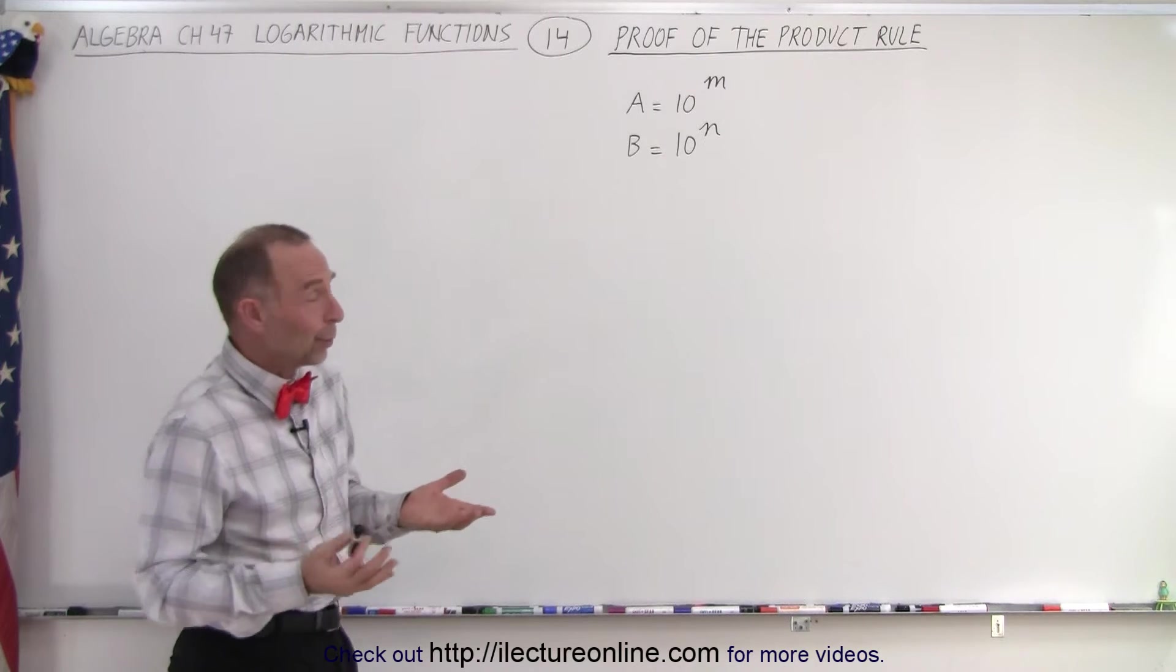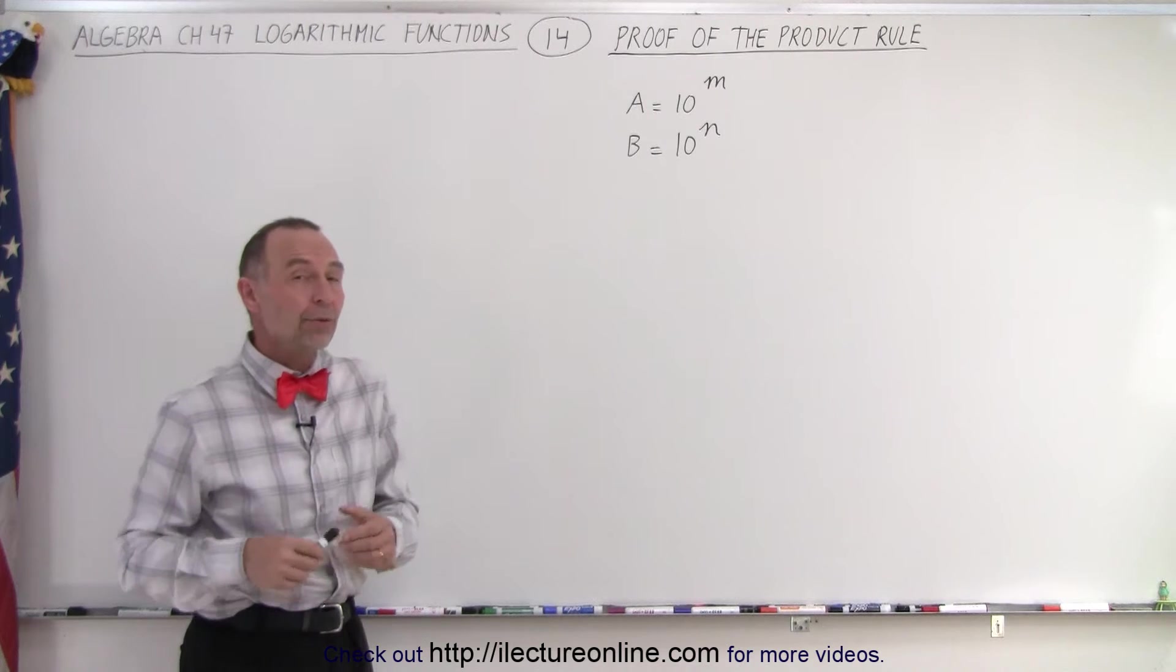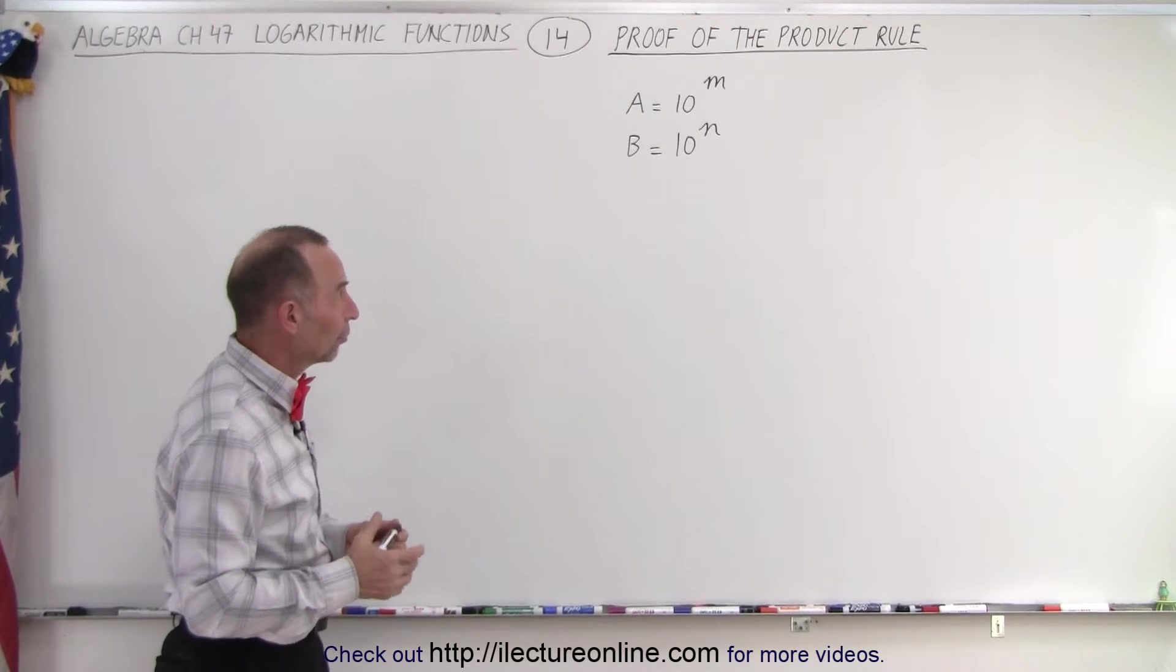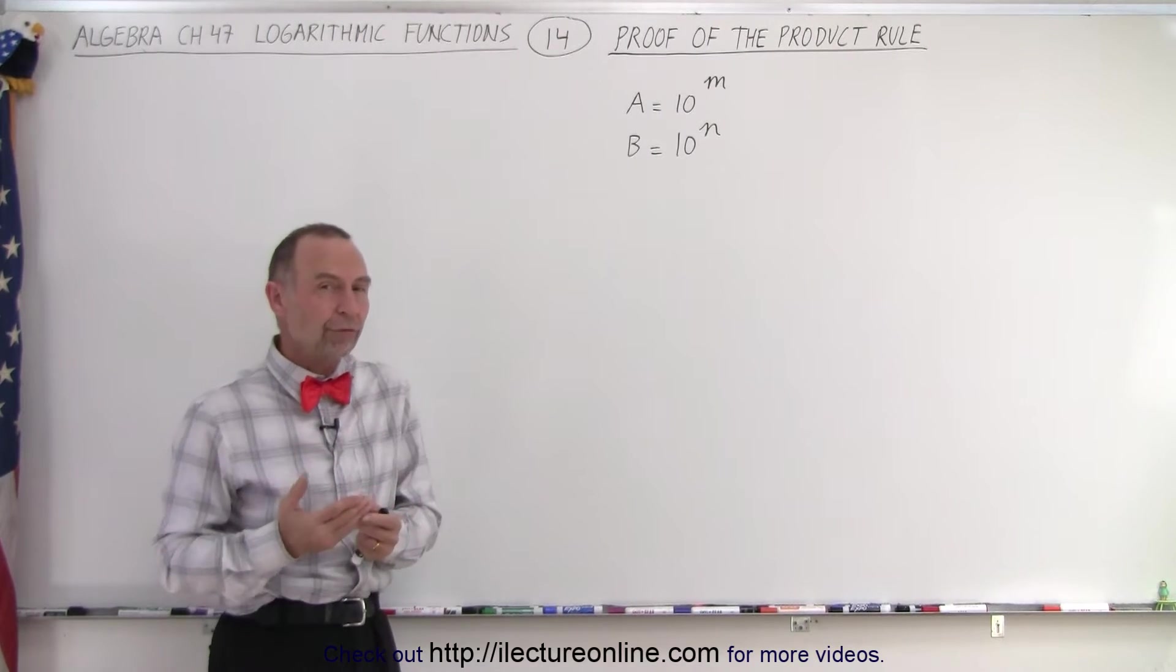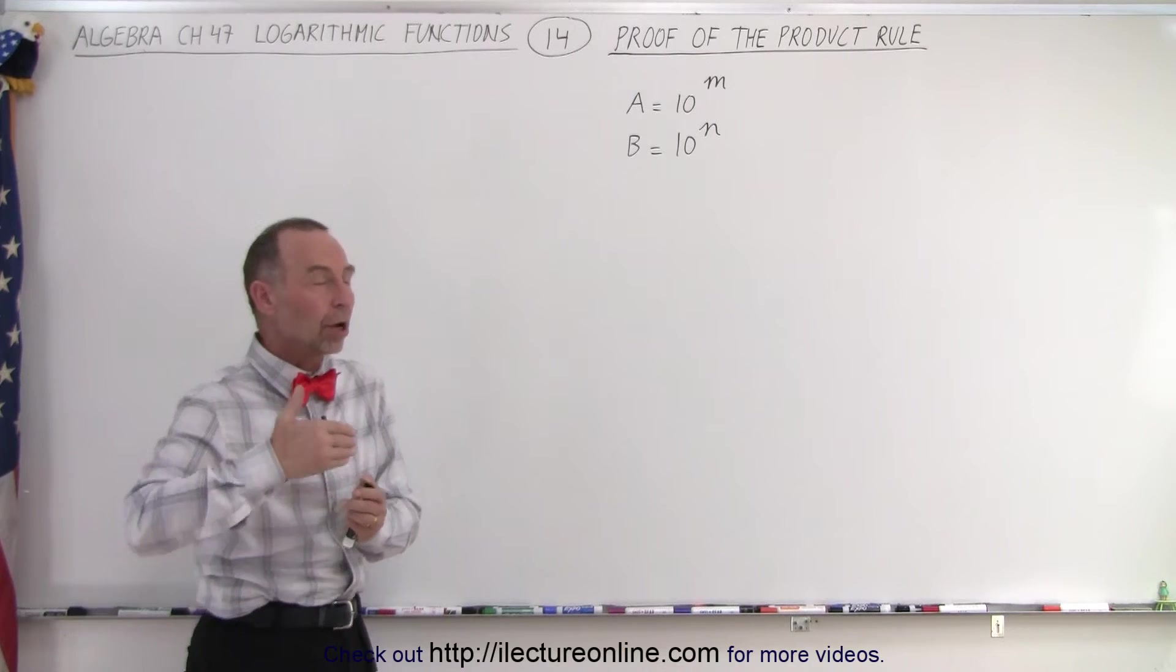So we're going to start out with A equals 10 to the m and B equals 10 to the n. So that is what we call the exponential form. Now let's convert that into the logarithmic form.